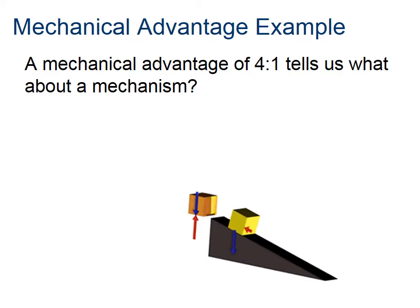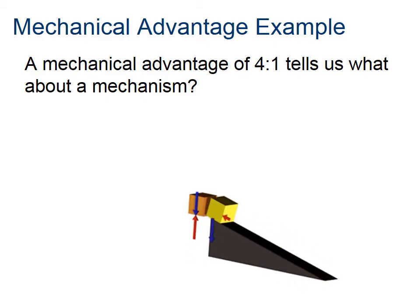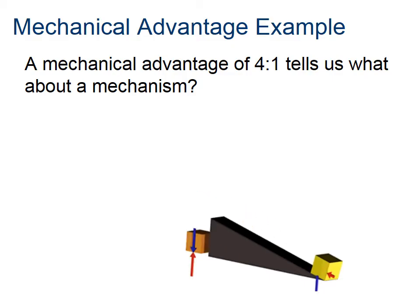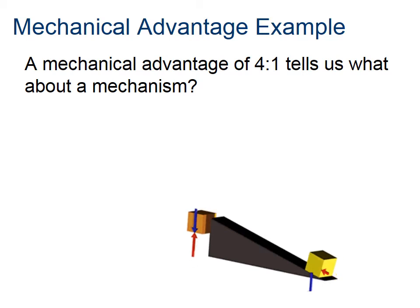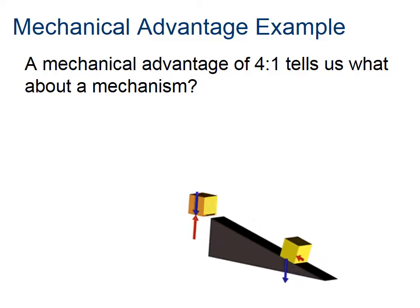Let's take a look at an example. Here you see two ways to move a box to the top of a ramp — you can lift it straight up or you can slide it up the ramp. We use an example of four to one, and that's really the proper way to write a mechanical advantage as a ratio: a four, a colon, and a one. You could also write it as just four — that's fine.